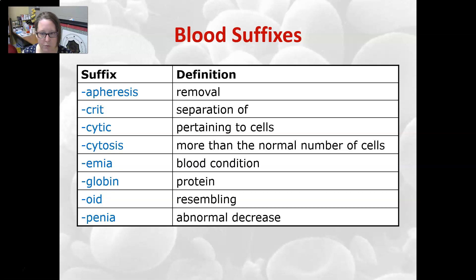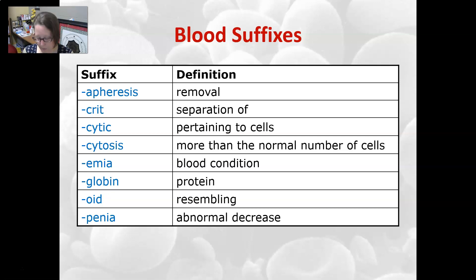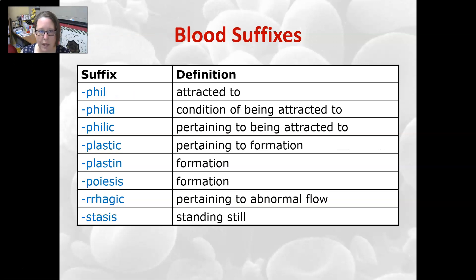OID means resembling, and penia is an abnormal decrease. So if you have leukopenia, that means there's not enough leukocytes or white cells. Phil is attracted to — so neutrophil, eosinophil, basophil — that's where you get the phil suffix.